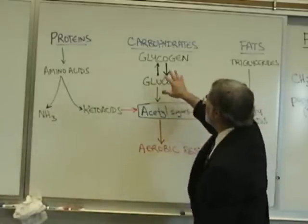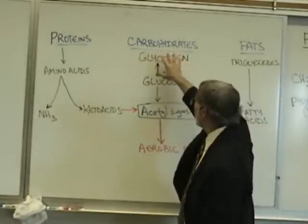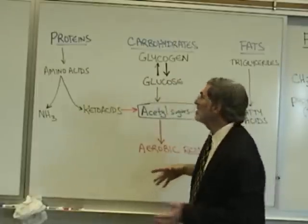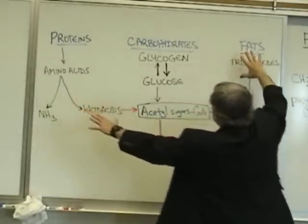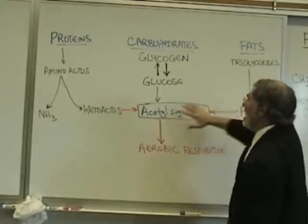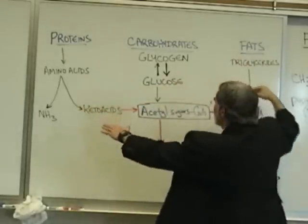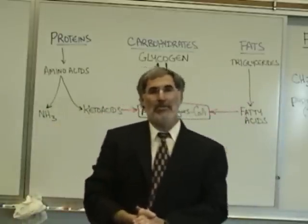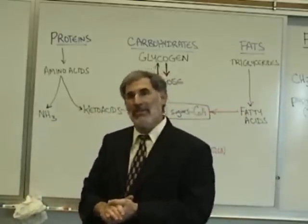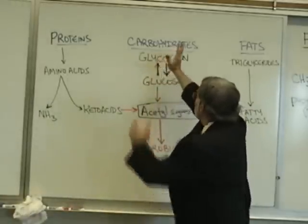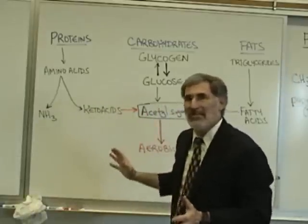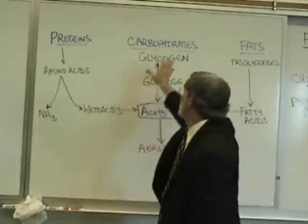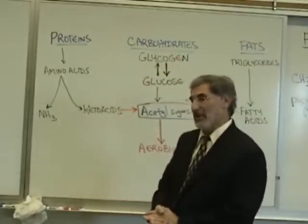We're going to first describe how cells break apart carbohydrates — sugars such as glucose — in order to make ATP. Then we'll come back and see how fats and proteins can be turned into sugars so they can also be broken apart to release energy. Carbohydrates are the centerpiece for understanding this, and then we'll see how fats and proteins feed into the process.